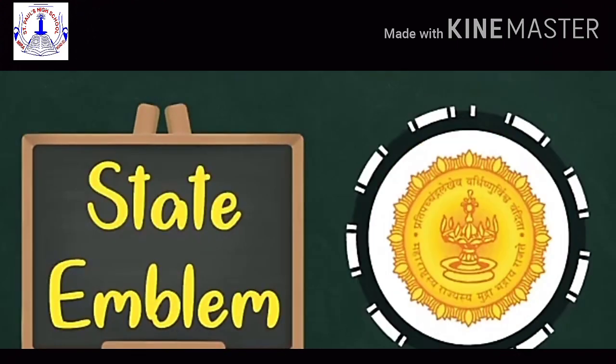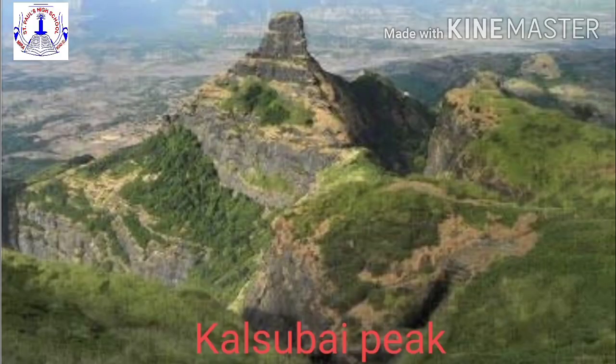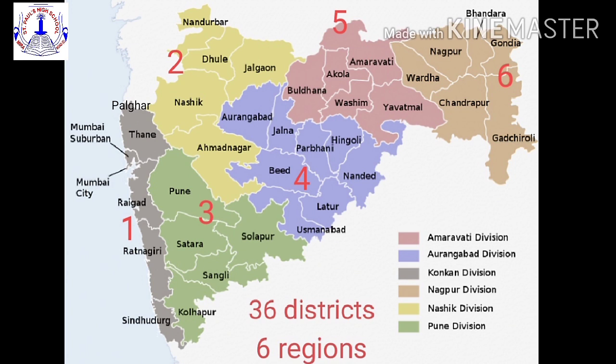Adding to the facts: the Godavari river is the longest river in Maharashtra. The Kalsubai is the highest peak in Maharashtra, in the Sahyadri mountains. Our state Maharashtra is divided into 36 districts and 6 regions for administrative purposes. These 6 regions are colored in different colors on the map: first Konkan, second Nashik, third Pune, fourth Aurangabad, fifth Amravati, and sixth Nagpur.